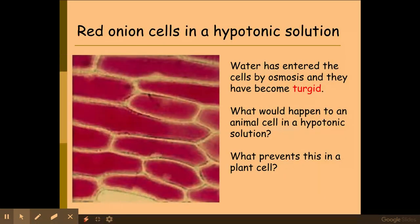So my red onion cells or a plant cell in a hypotonic solution, this is where water has entered into the cells by osmosis. This is where it's been put into, for example, pure water, a higher water potential. So there's a higher water potential outside of the cell. Therefore, water has moved in by osmosis down the water potential gradient.